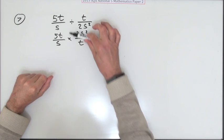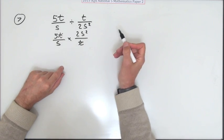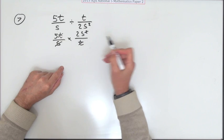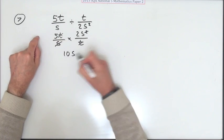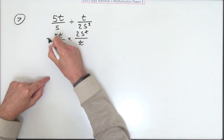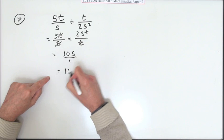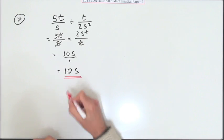Cancel out any factors in common between numerator and denominator. The t can cancel out the t, the s can cancel out one of the s's. So I'm left with 5 times 2 is 10 times s. Underneath they both went, so there's just a one underneath, which means the answer for three marks is 10s. Couldn't get better than that.